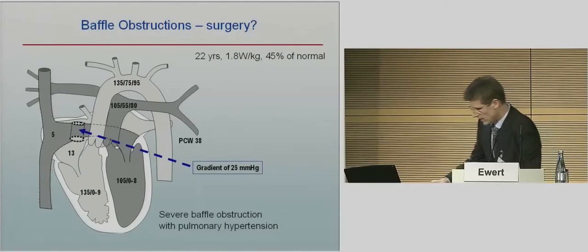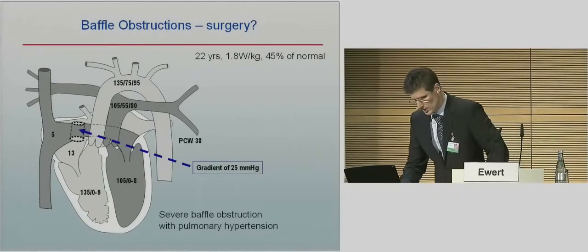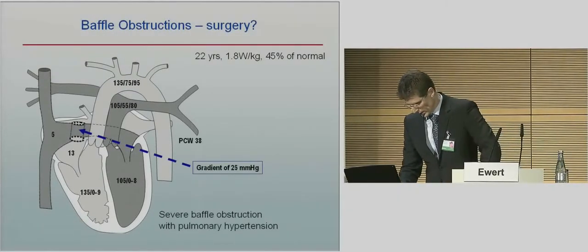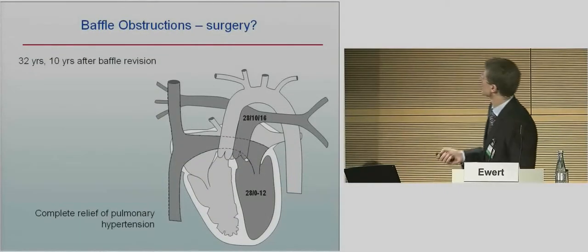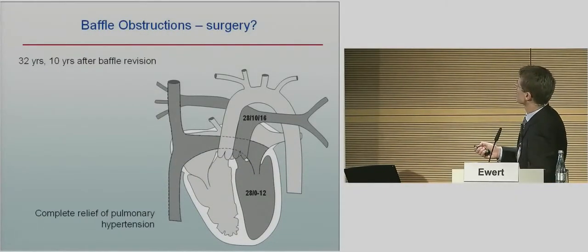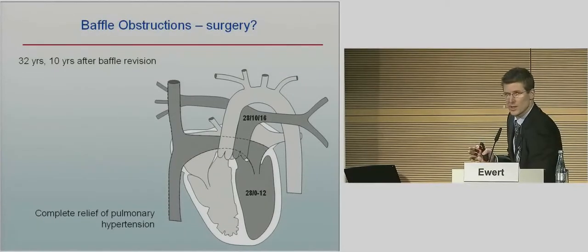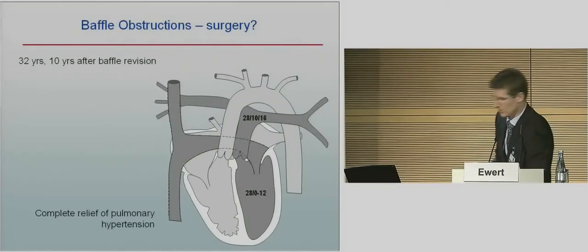We were fortunate that ten years later, after a successful operation, we had catheterization pressure measurements. Ten years later he has a left ventricular peak pressure of 28 mmHg and normal pulmonary pressure. So theoretically, an arterial switch would also have been possible.